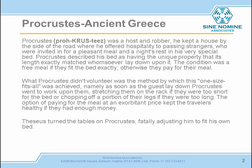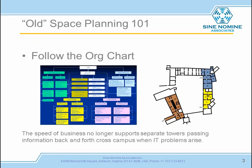The travelers who had enough money stayed healthy. This is turned the tables on Procrustes later, fatally adjusting him to fit his own bed. The old space planning for office space is often seen in NOC design, and it's not the right way to do things.